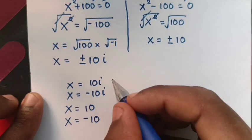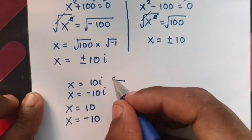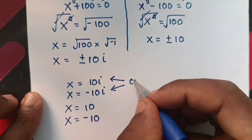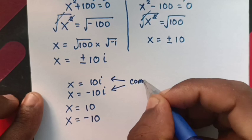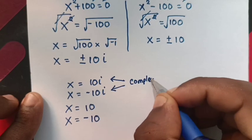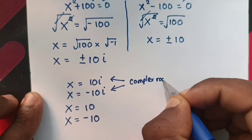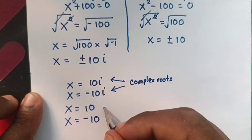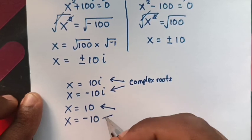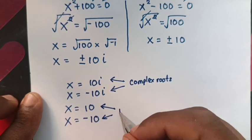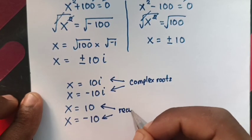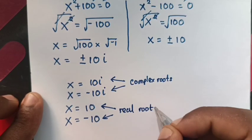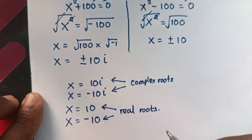So we have four solutions in total. The two solutions x = 10i and x = −10i are complex roots, and the other two solutions x = 10 and x = −10 are real roots.